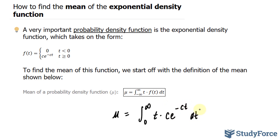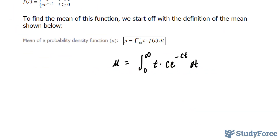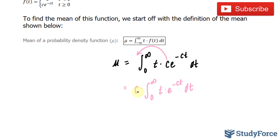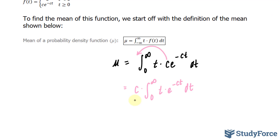Next, I'll pull out the factor c, because that's a constant — we don't need to integrate it. This becomes c times the integral between zero and infinity of t times e to the power of negative c t dt. Notice that this integral is an improper integral, because one of our bounds is infinity. We'll have to take the limit later on and replace infinity with an arbitrary constant, but I'll leave it as is for now.